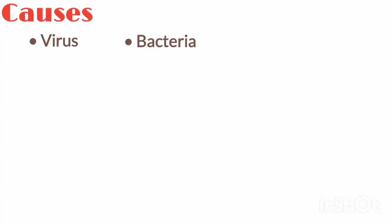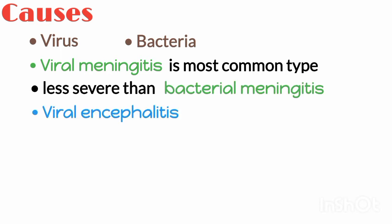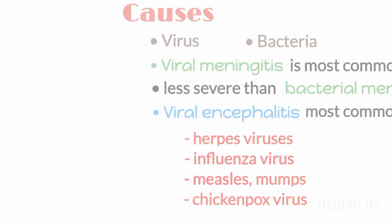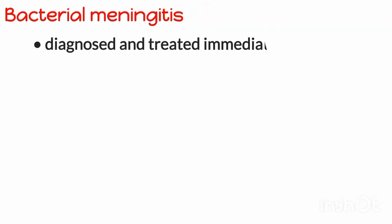Meningitis and encephalitis can both be caused by a virus or bacteria. Viral meningitis is the most common type of meningitis and is less severe than bacterial meningitis. Viral encephalitis is the most common type of encephalitis. Both viral conditions can be caused by herpes viruses, influenza, measles, mumps, and chickenpox virus.